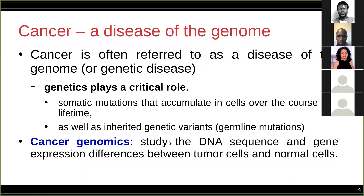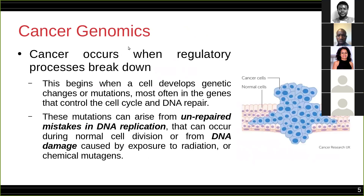What is cancer genomics? Cancer genomics is the study of the totality of the DNA sequence and the gene expression differences between the tumor cells and the normal cells. These aberrations cause cancer to progress and become lethal when regulatory processes break down. It begins when a cell develops genetic changes or mutations, most often in the genes that control the cell cycle and DNA repair — both of them.